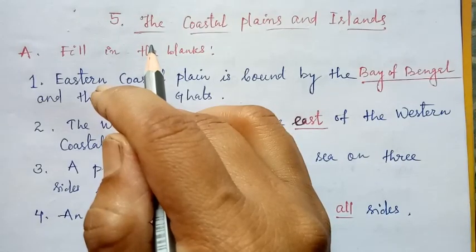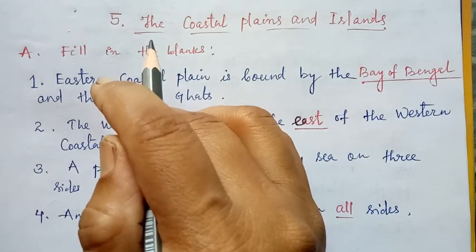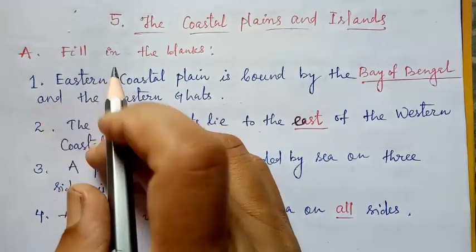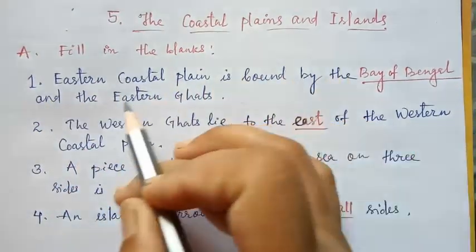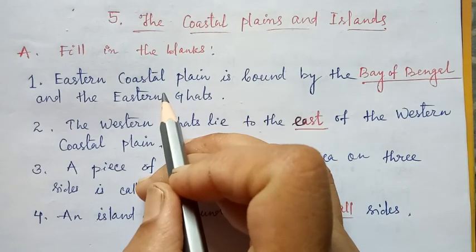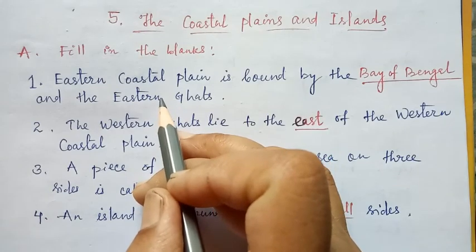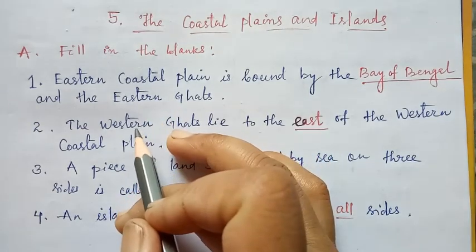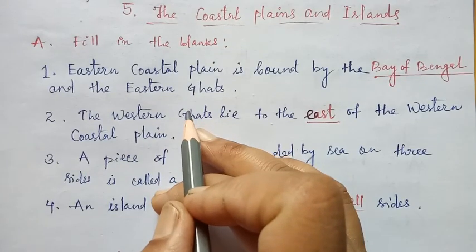Hello everyone, today we are going to discuss the exercise of Chapter 5, that is Coastal Plains and Islands. First is your fill in the blanks: Eastern Coastal Plain is bound by the dash and the Eastern Ghats. Eastern Coastal Plain is bound by the Bay of Bengal and the Eastern Ghats.